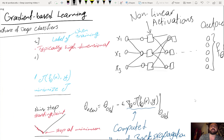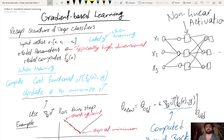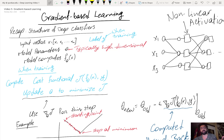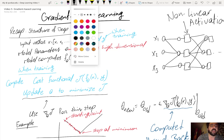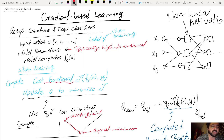Here y represents the true labels. In a classification setting, we are given examples of input vectors along with their true labels. During training, for each input vector and the current setting of the model parameters, we compute f_θ and then compute the cost in terms of the output units and the true labels. The true labels are given during training, and then we update θ to minimize J.